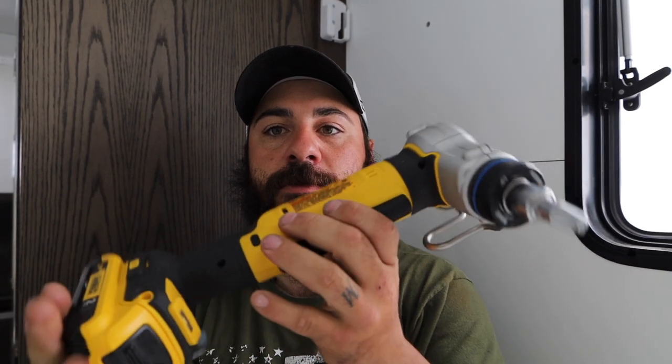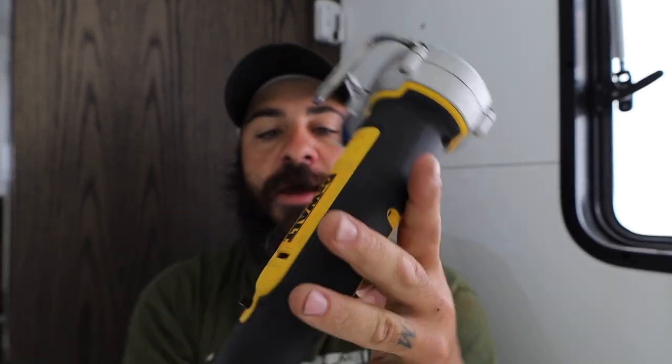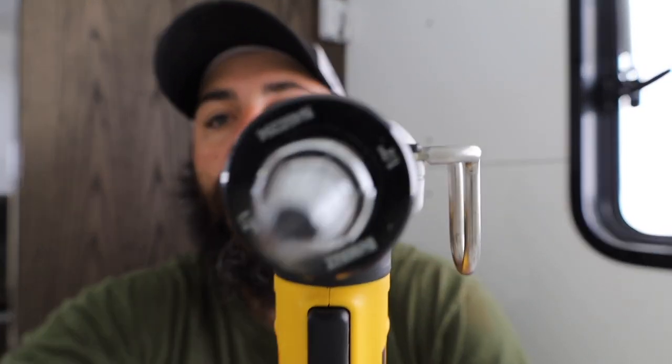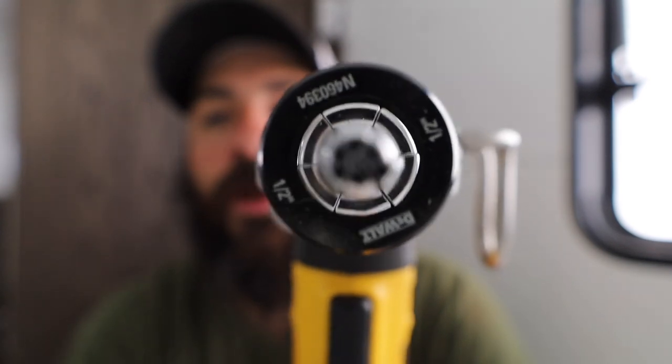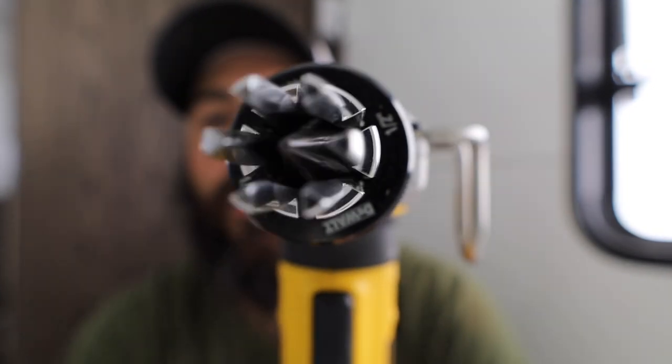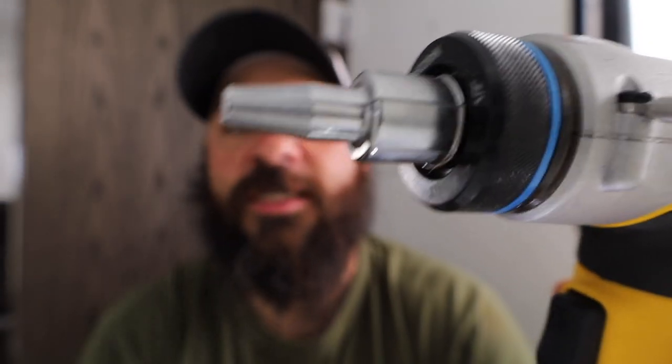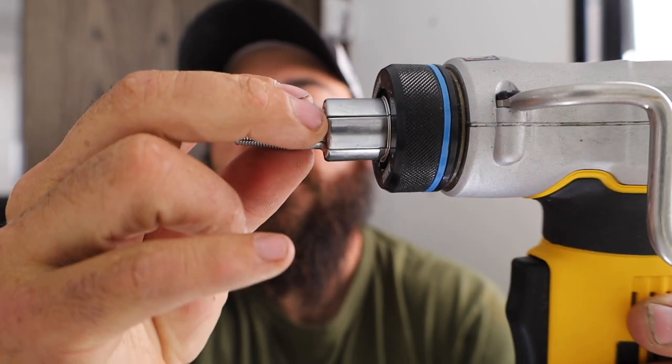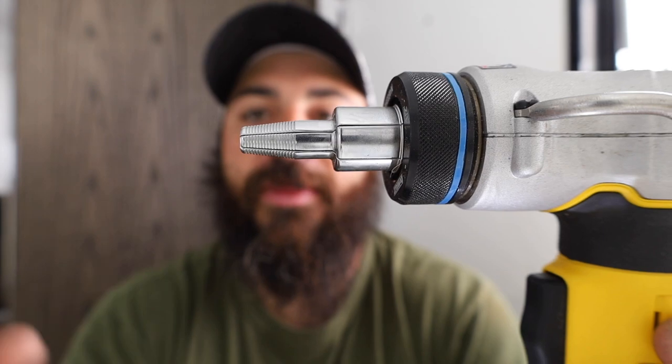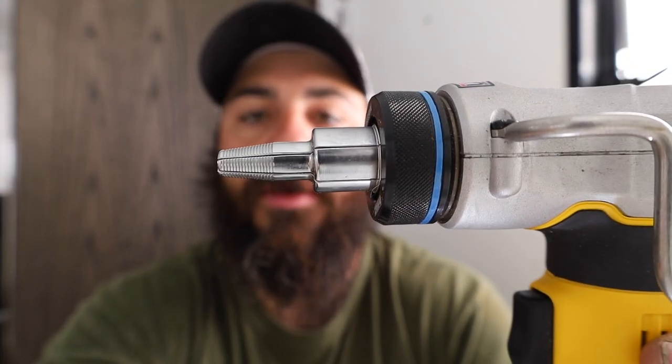This is our expander tool, so this one's made by DeWalt and this tool is a DCE 400. These things are going to just expand that ring. I'll actually run it right now for you. So this expands, you slide the ring and the tube over it, this thing's going to expand and it's going to make that tube and ring larger than it normally would be.